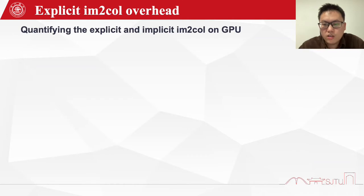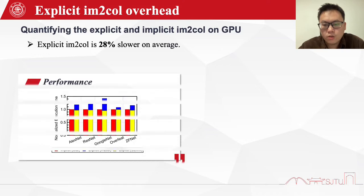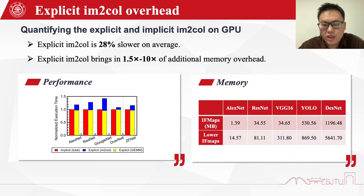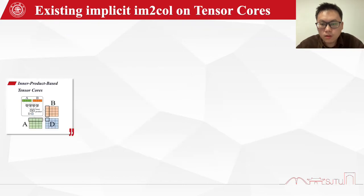We quantify the explicit and implicit image-to-column methods on GPU from both performance and memory perspectives. The data is measured on a V100 GPU using APIs from the cuDNN library. We find that the explicit image-to-column method is on average 28% slower, while incurring an additional memory overhead of 1.5 to 10 times.